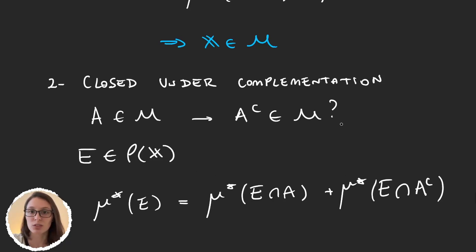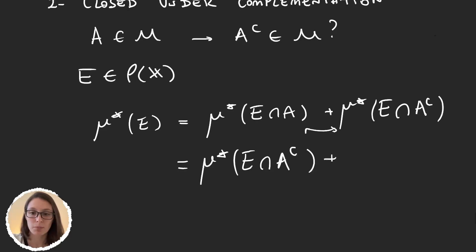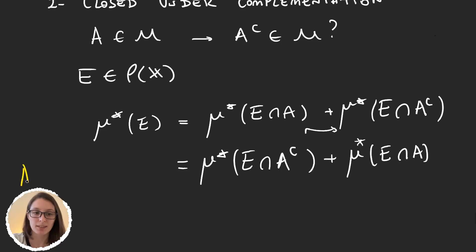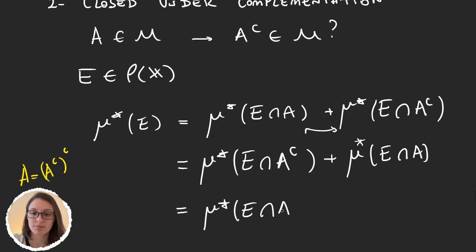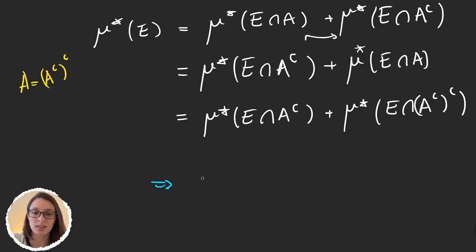This is just the definition of A being a measurable set. And now we can swap these two terms, which gives us the measure of E ∩ A^c plus the measure of E ∩ A. But now just remember that A = (A^c)^c, so we can rewrite the second term as E ∩ (A^c)^c. And so we have the form E ∩ (A^c) plus E ∩ (A^c)^c, which tells us that A^c is measurable and therefore is an element in M.